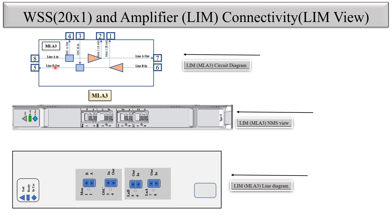The outside signal is coming into port 8, and the signal is going out to the outside — to the fiber towards the far end — from port number 5. Port number 7 and 6 are used to connect internally with another equipment which is placed at the same location.